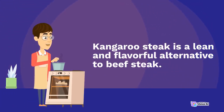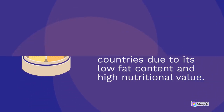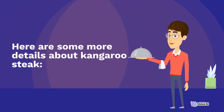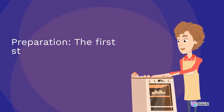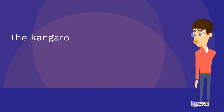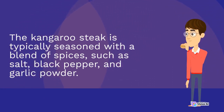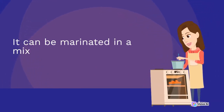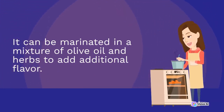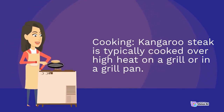Kangaroo steak is a popular dish in Australia and is becoming more widely available in other countries due to its low-fat content and high nutritional value. The first step in making kangaroo steak is to prepare the meat, typically seasoning it with a blend of spices such as salt, black pepper, and garlic powder. It can also be marinated in a mixture of olive oil and herbs to add additional flavor. Kangaroo steak is typically cooked over high heat on a grill.